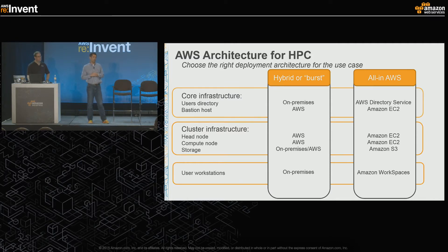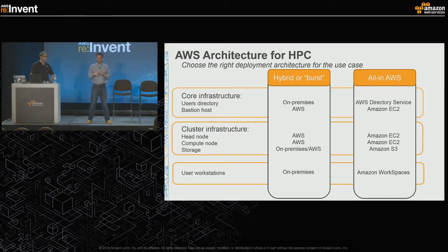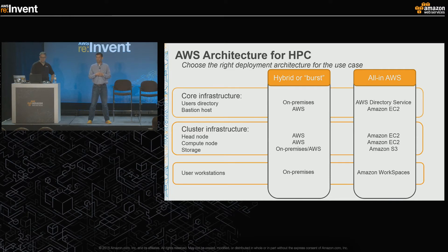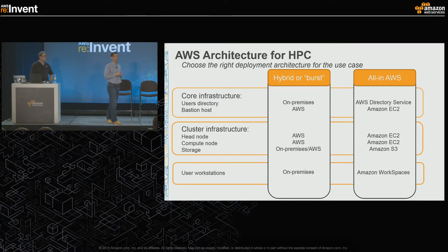For the all-in approach on AWS, we have AWS Directory Service for managed user directory, eliminating the need to manage that infrastructure yourself. Bastion host, head nodes, and compute nodes all run inside Amazon EC2. For storage, Amazon S3 provides the durability needed. Additionally, for the visualization and rendering that happens with Windows HPC applications in an all-in AWS approach, you can run Amazon WorkSpaces to visualize or render data, transferring just pixels to the end user - which means lower latency and greater customer satisfaction.